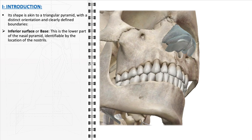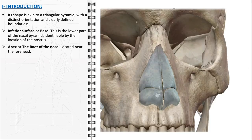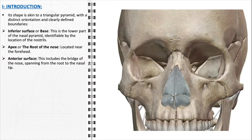The inferior surface, or the base of the nasal pyramid, is most easily recognized by the presence of the nostrils. This part marks the entrance to the nasal cavities and plays a vital role in respiratory function. The apex, or the root of the nose, is situated near the forehead, blending seamlessly into the facial structure. The anterior surface includes the bridge of the nose, extending from the root down to the nasal tip, varying greatly in shape and size among individuals.